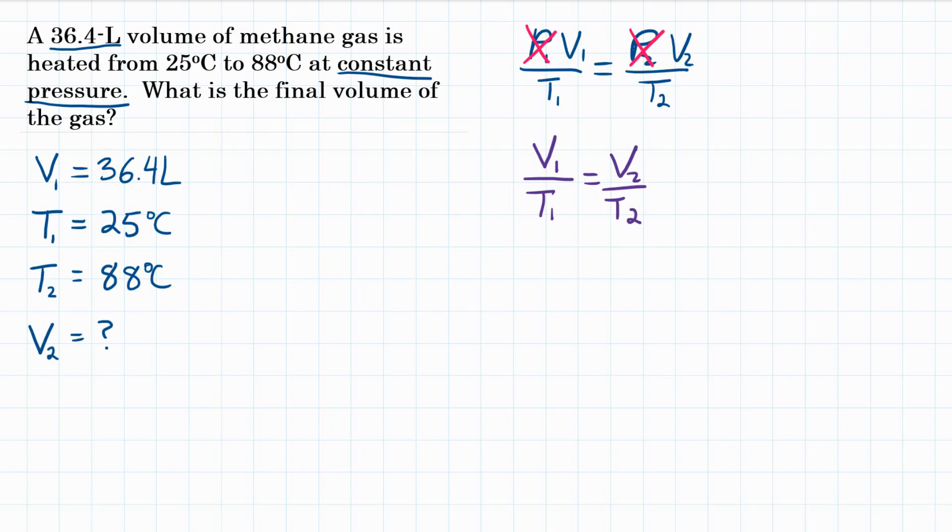So at this point, we could plug in our values. But before we do that, we're going to convert our two temperatures from Celsius to Kelvin. And we have to do that when using the combined gas law or any of the other gas laws such as Charles Law. We have to turn temperatures into Kelvin.